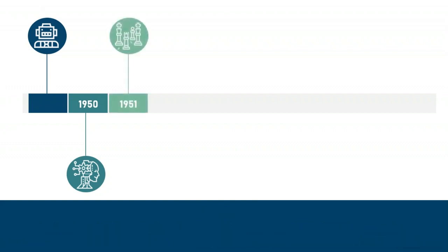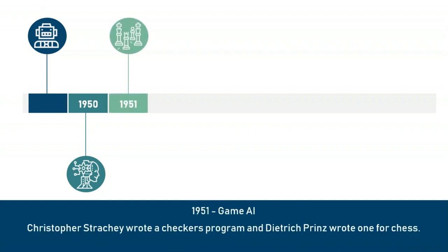Following this was the era of 1951, also known as the game AI. By using the Ferranti Mark I machine of the University of Manchester, a computer scientist known as Christopher Strachey wrote a checkers program. At the same time, a program was written for chess as well. These programs were later improved, but this was the first attempt at creating programs that could compete with humans in playing chess.